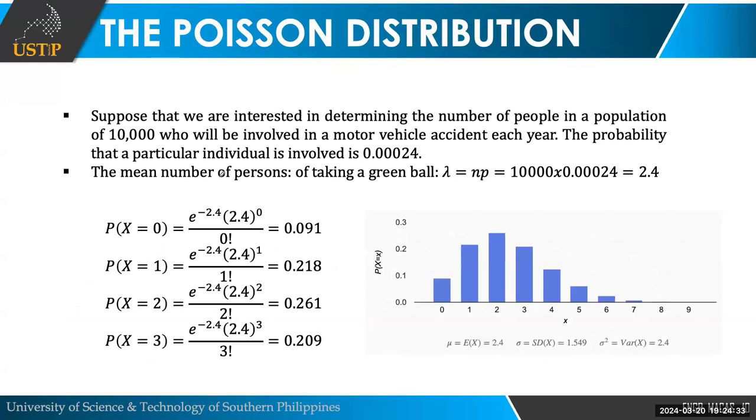Let's have an example. Suppose we are interested in determining the number of people in a population of 10,000 who will be involved in a motor vehicle accident each year. So, sa 10,000 tao, what is now the probability that a randomly chosen person is involved in a motor vehicle accident? And the probability class, that a particular individual is involved in this kind of accident is 0.00024. It's a very small chance, pero we have a value that we can use. The mean, the first thing to do is of course, the value of your lambda, which is your n times p, and this is also the value of your mean and the variance, right? So, n times p, again, n here is not the number of trials, n is more of the population value, that is 10,000, multiplied by the probability that your event is occurring, that is 0.00024, your lambda is 2.4.